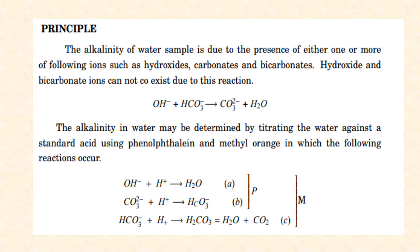Hence, either hydroxide or carbonate, or an individual ion, may be responsible for the alkalinity of water. To identify the quantity and the ion present, we carry out this experiment using two indicators: phenolphthalein indicator, used to neutralize the strong base, and methyl orange indicator, used to neutralize both the strong and weak base. Methyl orange indicates the total alkalinity value.